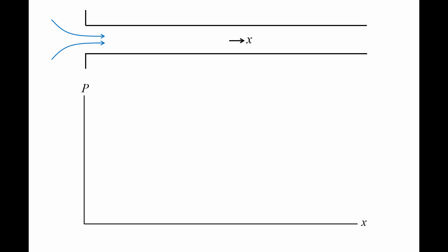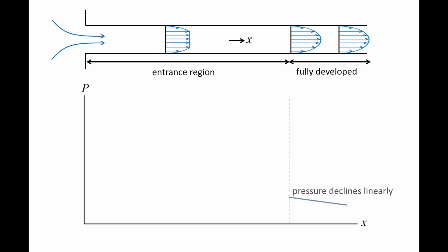Next we will examine how pressure changes qualitatively in a pipe system. Here we have flow entering a horizontal pipe from a reservoir. There is an entrance region where the flow is developing and the velocity profile changes in the axial direction. Then the flow becomes fully developed and the velocity profile is constant in the axial direction. Once a flow becomes fully developed, pressure declines linearly in the axial direction. However, in the entrance region, the pressure gradient is greater due to two factors.